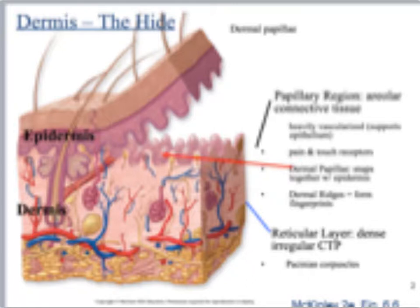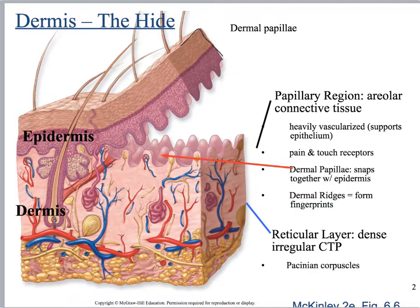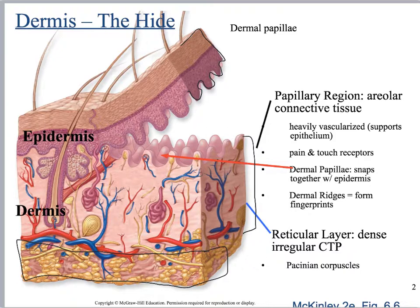Looking at our structures, we will see that we've got our epidermis up here, and then the dermis is here, and then the hypodermis is here. Remember that technically the hypodermis is not part of the integumentary system. I'm actually going to erase this so that we can see this stuff a little better — it was obscuring my little pointers.